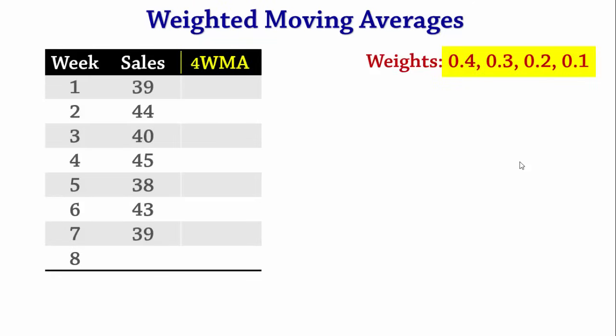Since we are computing 4 week averages, we start by using data from the first 4 weeks to compute the moving average forecast for week 5. So F5, the forecast for week 5, equals 0.4 times 45 (notice that 45 is the most recent value), plus 0.3 times 40 (the next most recent value), plus 0.2 times 44, plus 0.1 times 39, which gives 42.7.